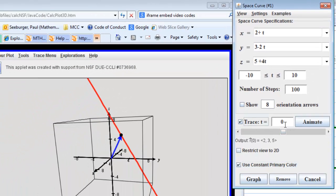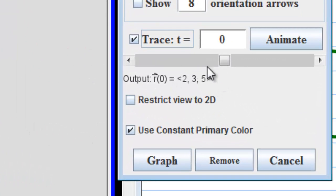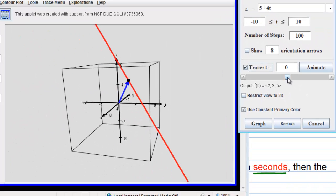If we trace this at 0, we can see we're at the point 2, 3, 5 at t equals 0. You can see very small print here, r of 0 is 2, 3, 5. And then, of course, we can animate motion along this line, and we can see the motion is basically constant, constant speed as we move along the line.